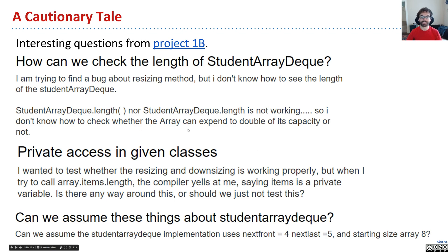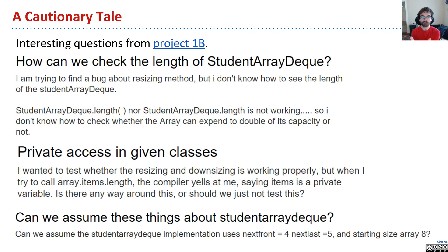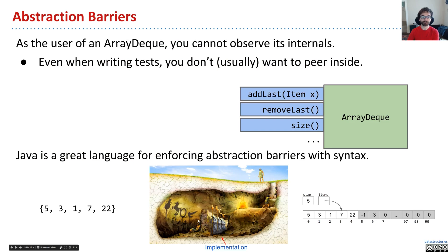Sometimes it makes sense to write tests at a very low level of abstraction. But imagine our goal as autograder writers — as instructors, we have no idea how you wrote your ArrayDeque. You could have done any number of strange things; maybe you have two arrays, five arrays, who knows? We have to just make sure that things obey the interface. The module you built, we're going to treat it as a nicely encapsulated thing, and then make sure it behaves the way we expect. As the user of an ArrayDeque, you cannot and ideally should not observe the internals.